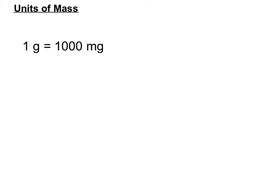We have one gram equaling a thousand milligrams, so the conversion rate is a thousand. But it depends on whether we are moving from a smaller unit to a bigger unit or vice versa — that'll decide whether we are multiplying by a thousand or dividing by a thousand to get from one number to the other. We'll have a look at how we decide that in a moment.